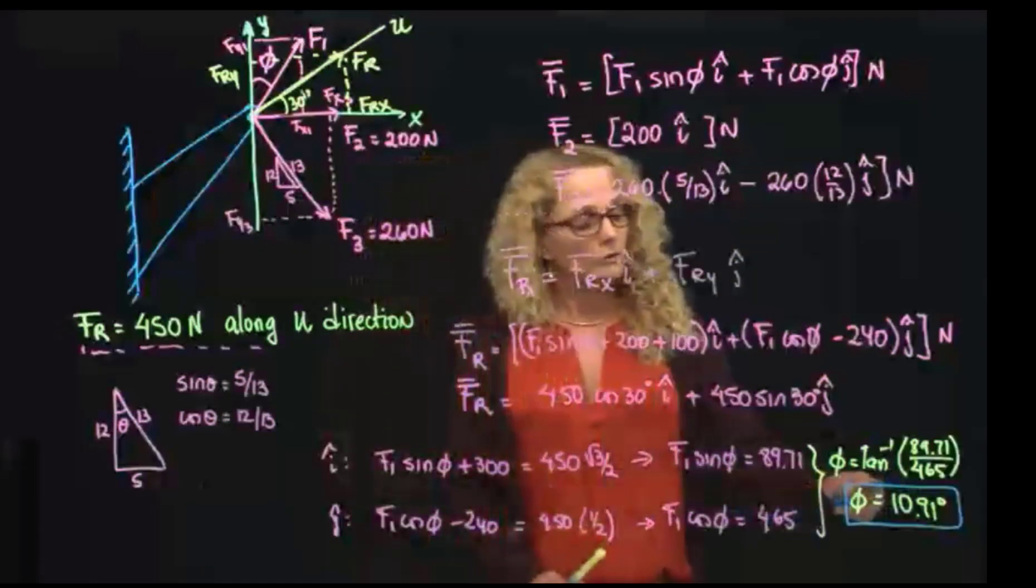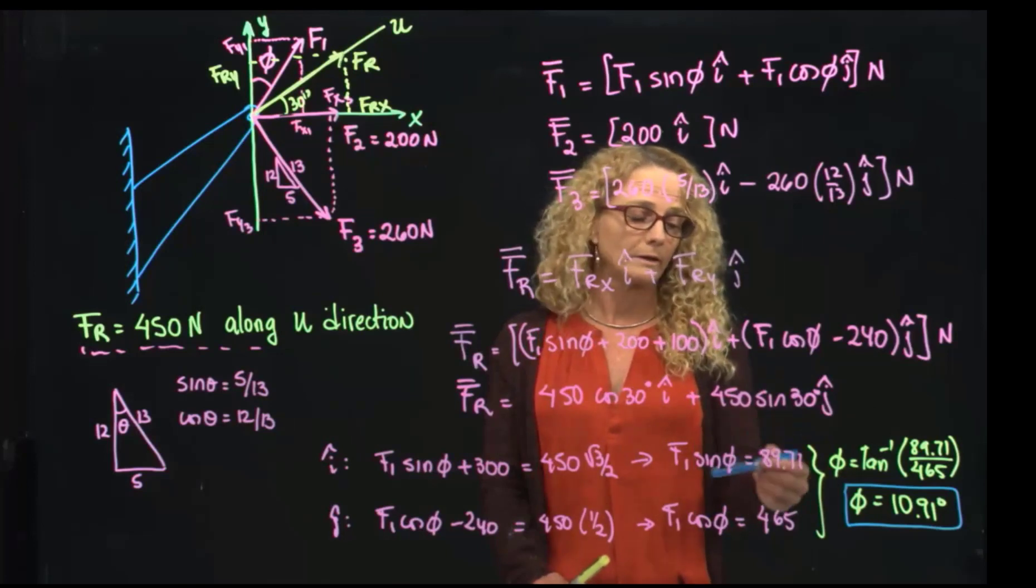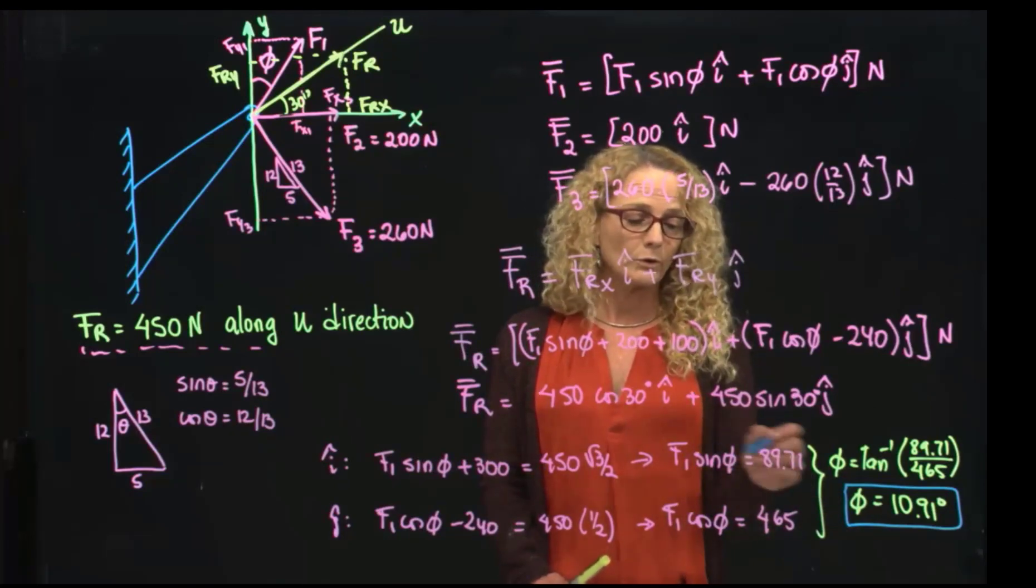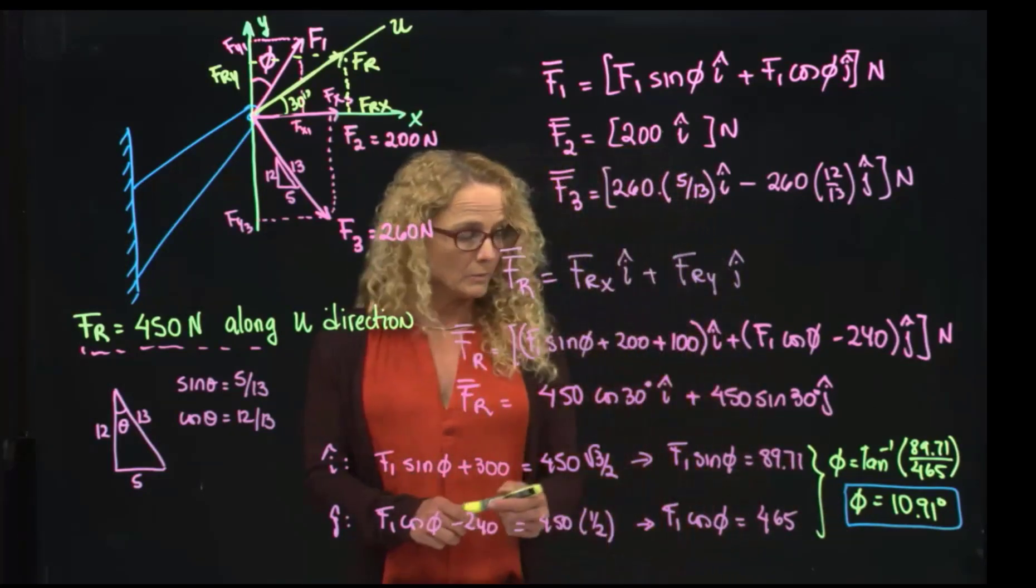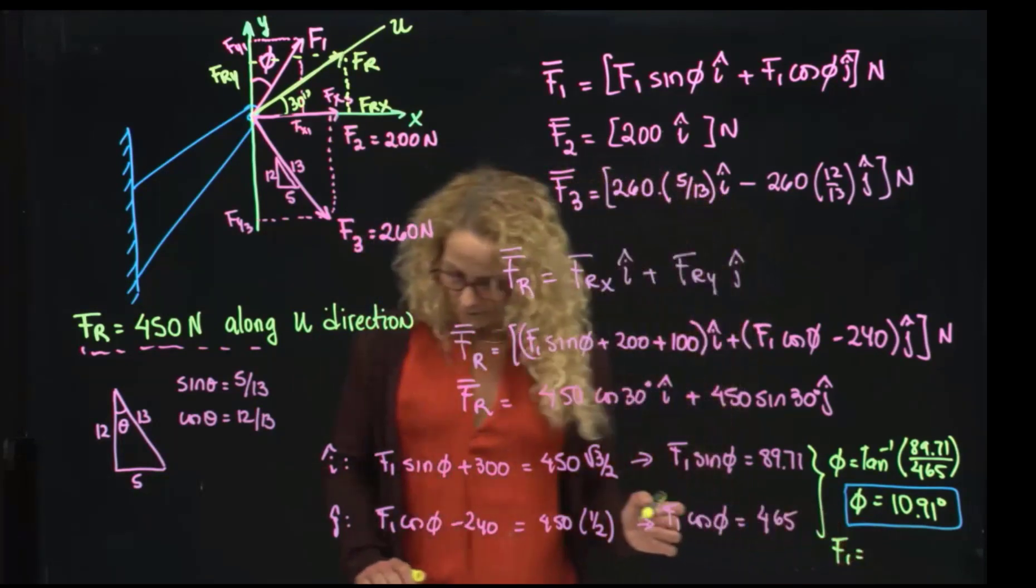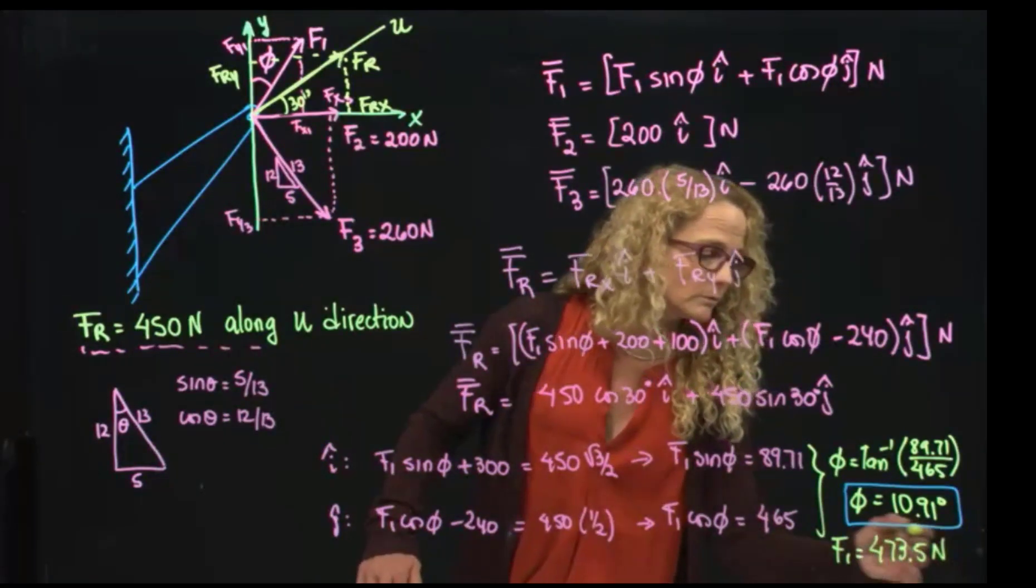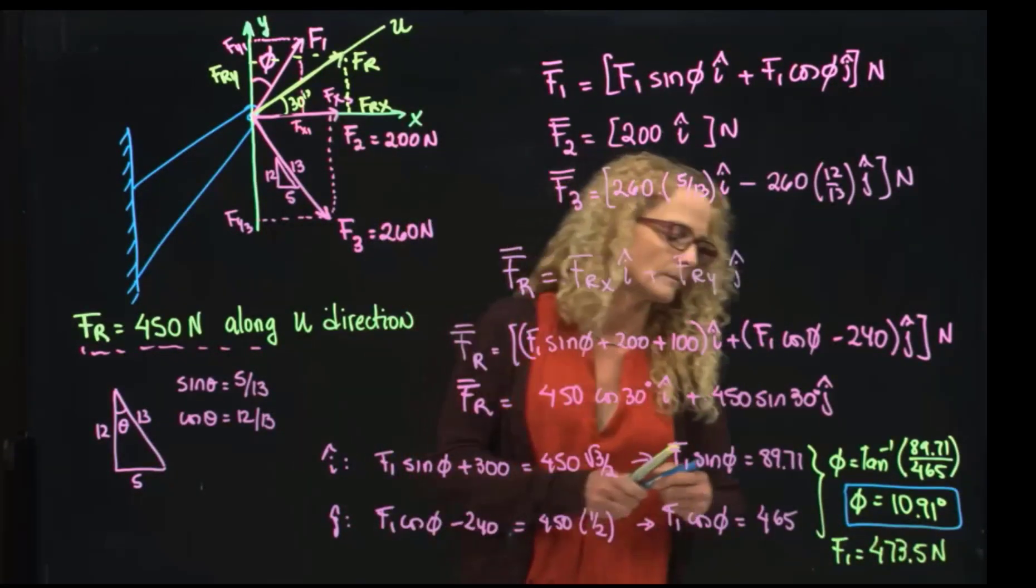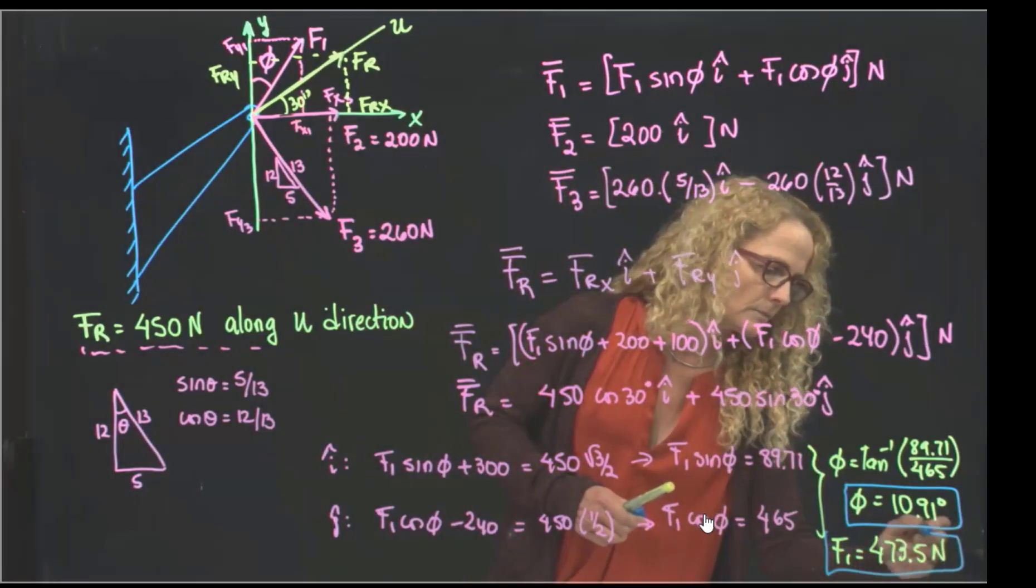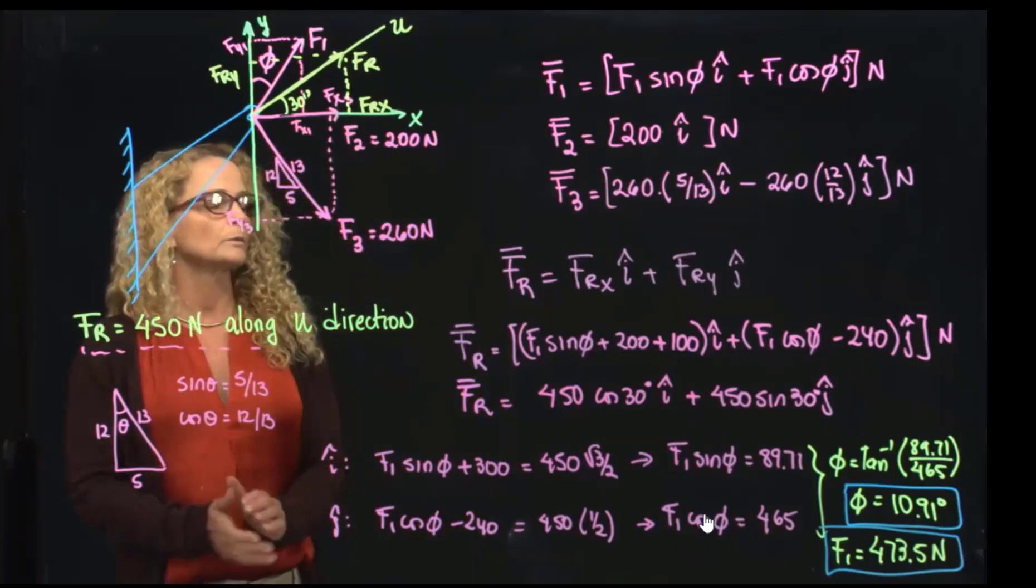And once we have found this angle, we just plug in that inside the cosine. We will get the same answer. It doesn't matter which equation we use, and we get the answer that F1 is equals to 473.5, and that's how we solve this problem.